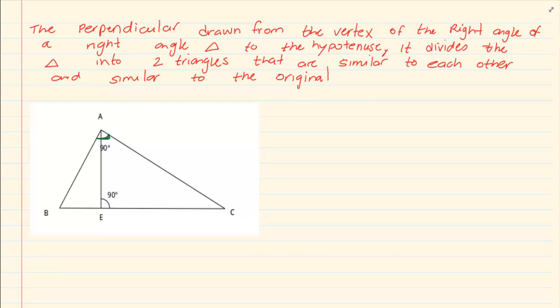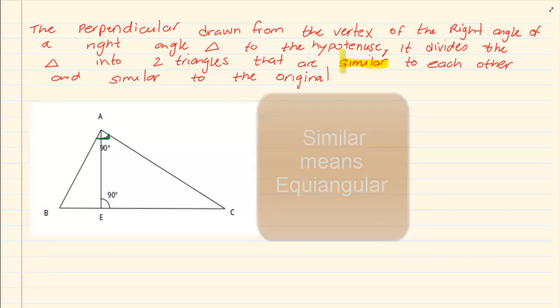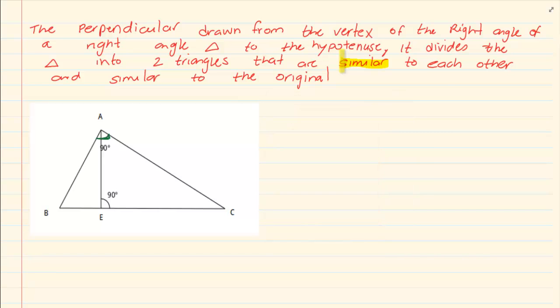Now what you must understand by the word 'similar': similar means that they are equiangular, and as soon as they become equiangular it means that their sides are in proportion.